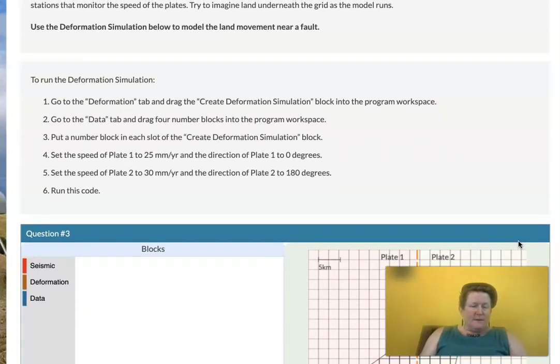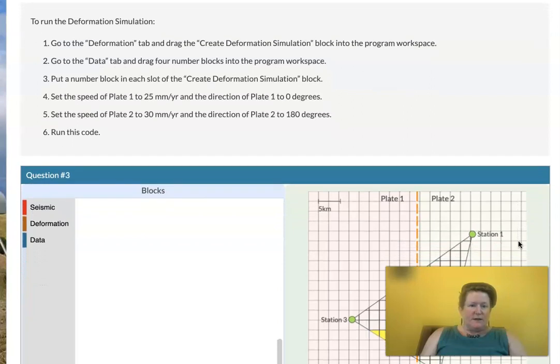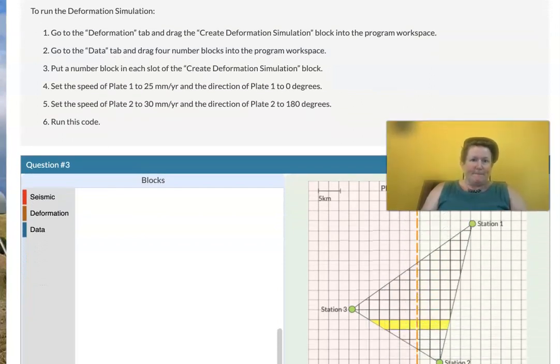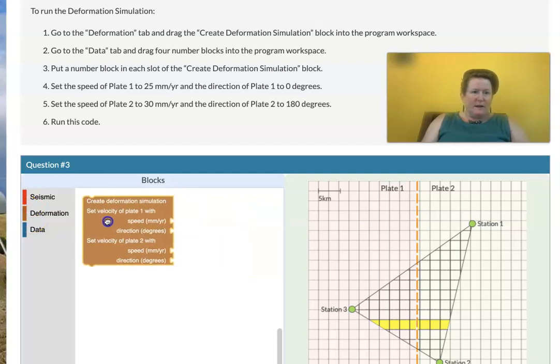So to run the deformation simulation to model land movement near a fault, we're going to go to the deformation tab here. That's a new tab in the coder. We're going to grab this block and bring it out. We're going to go to the data tab and drag four number blocks into the program workspace. So that's a number block. We'll drag them in here. You can actually just plug them right in.